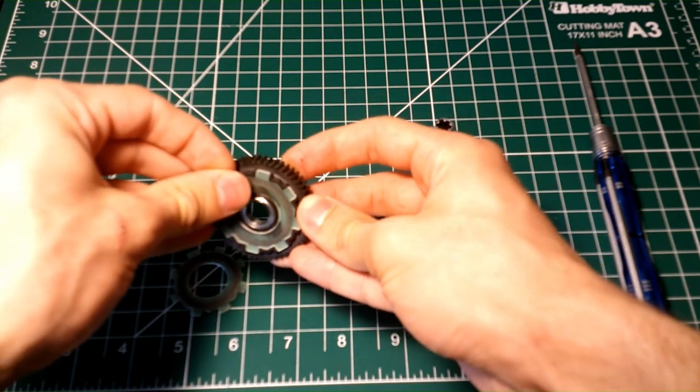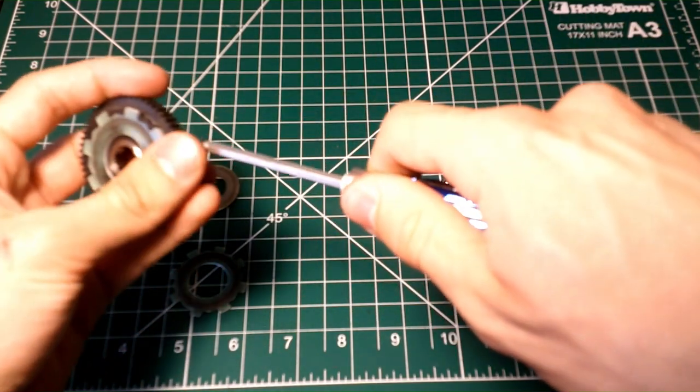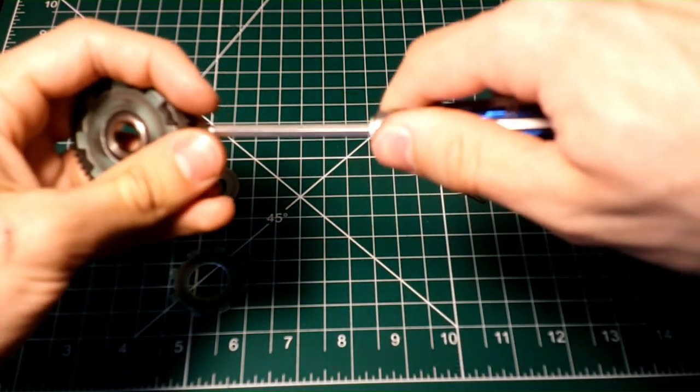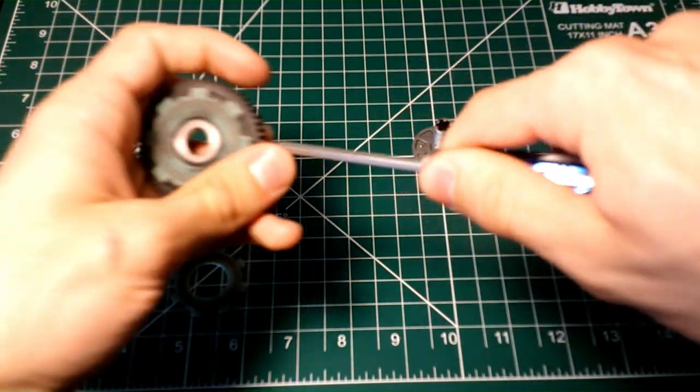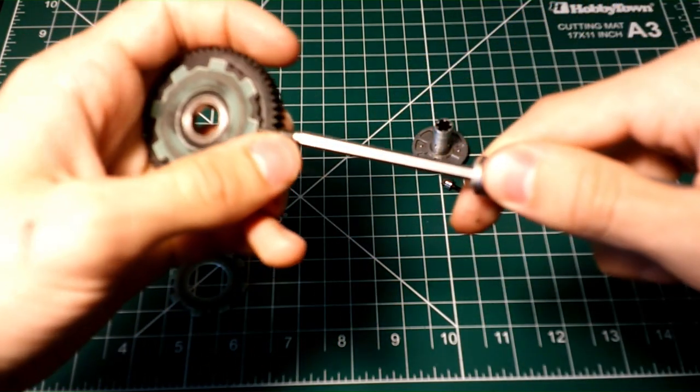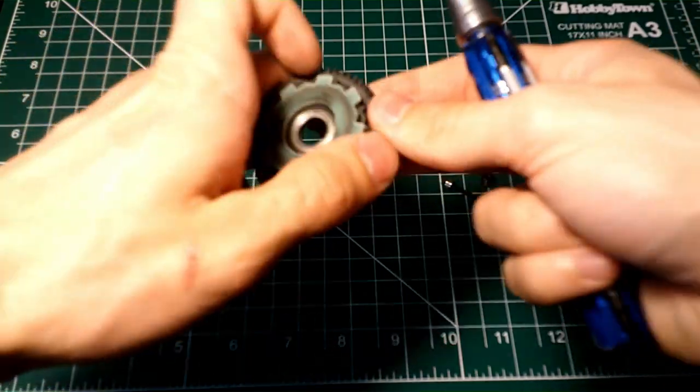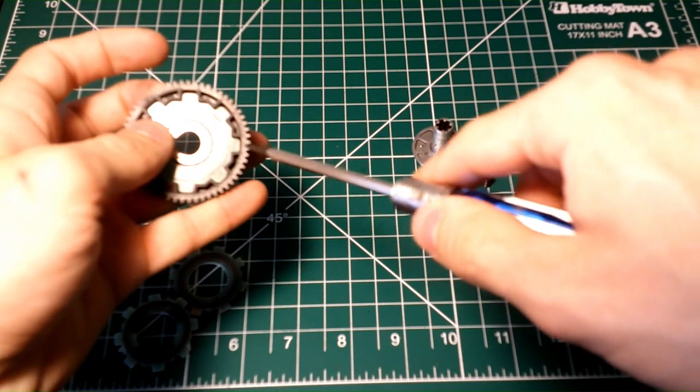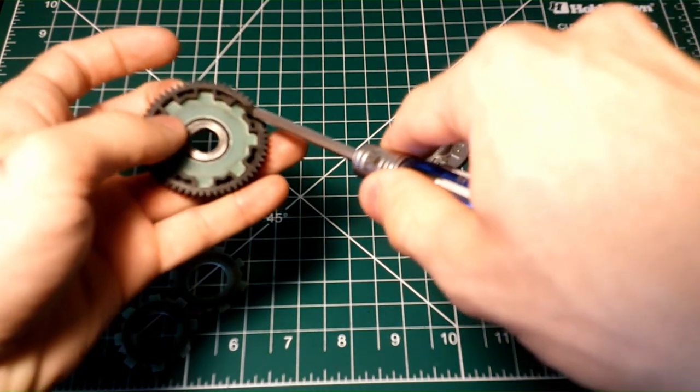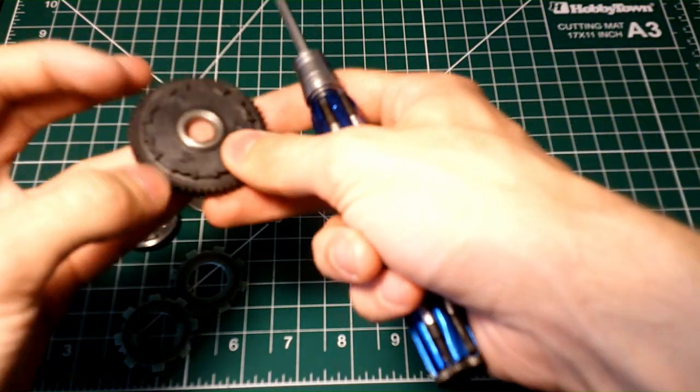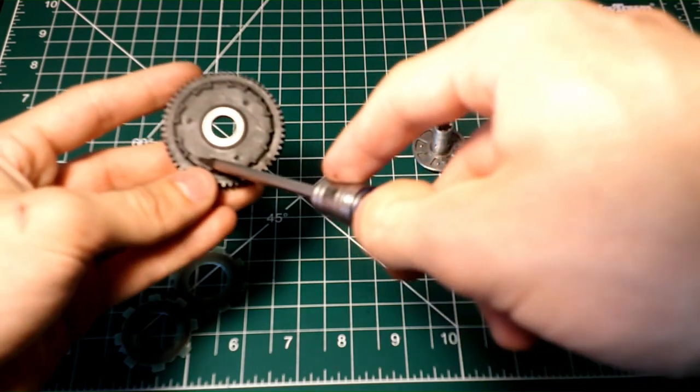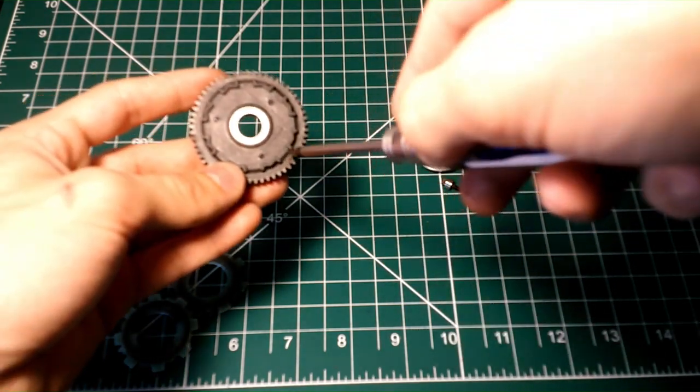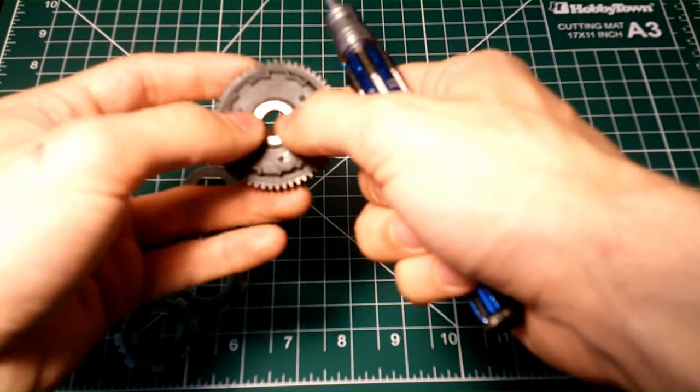Now you might want some kind of pry tool to pry these out. For example, a flat bladed screwdriver if you have one in your tool kit. Just like that. There's the other, another one. And this one in the bottom is going to be the most difficult to get out. Some of the metal spur gears will actually have holes on this side, so you can just push the pad out from this side.